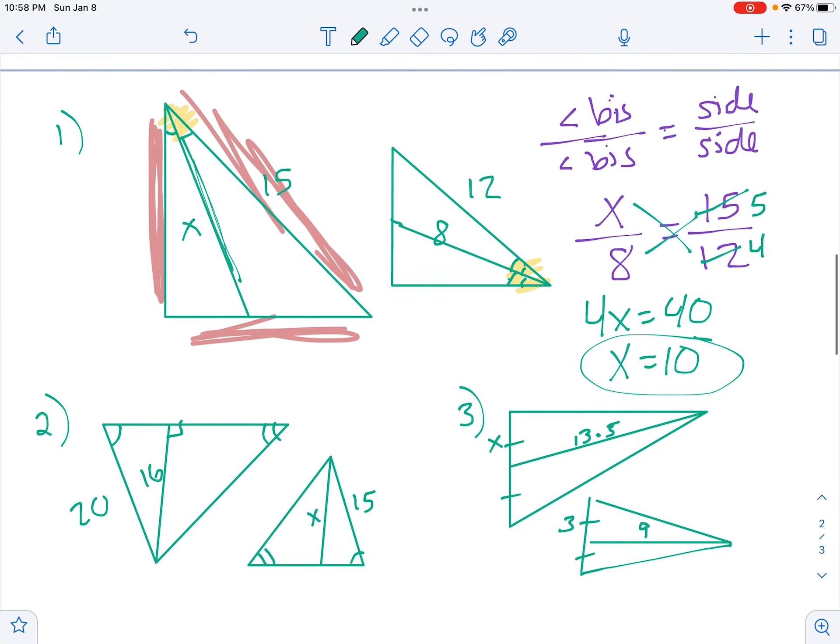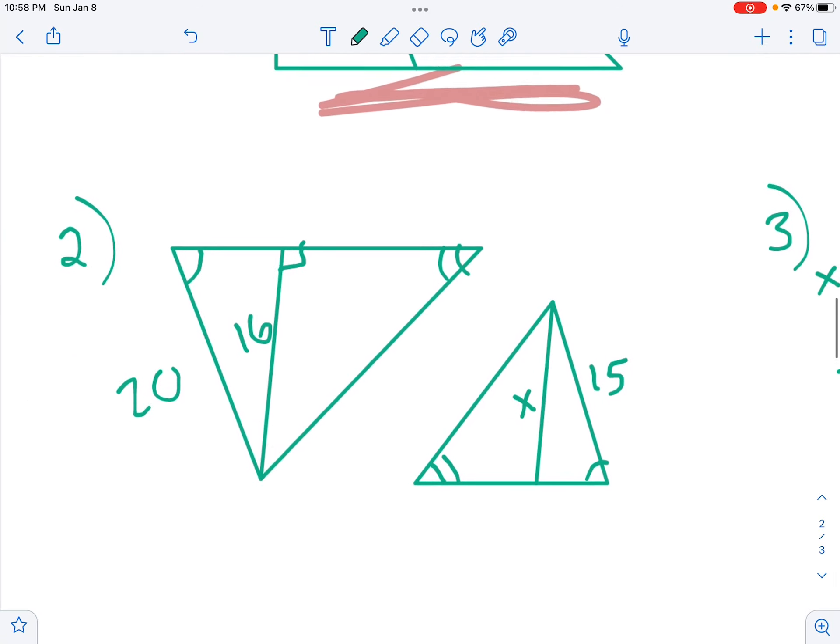Divide both sides by 4, and you get X equals 10. So there's the angle bisector of the first triangle.